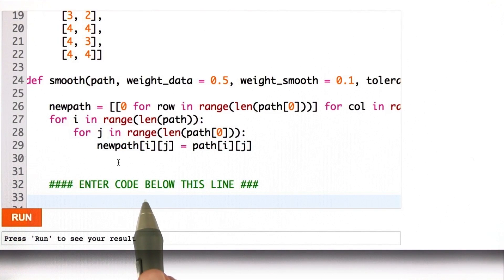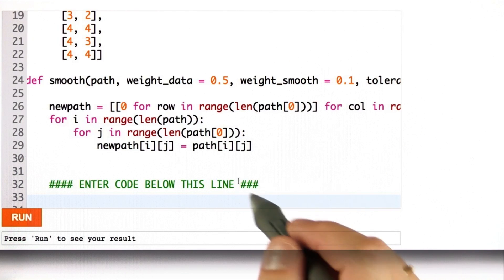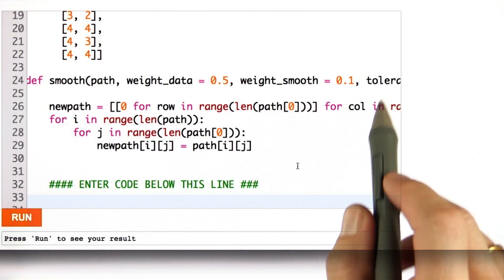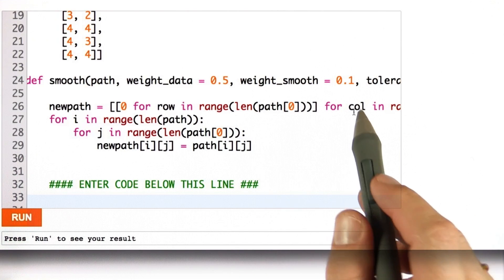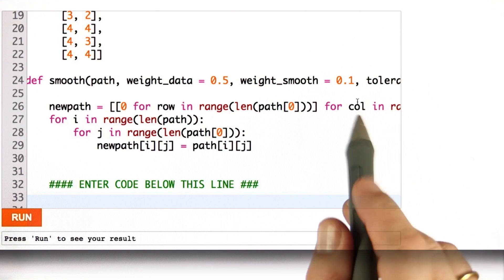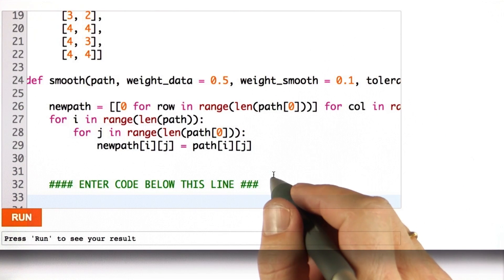I want you to implement the smoother. What the smoother does, it iteratively applies the two equations I just gave you to all nodes except for the first and the last. And it does so until the total change observed in the update step becomes smaller than tolerance, at which point we consider the smoother to have converged.